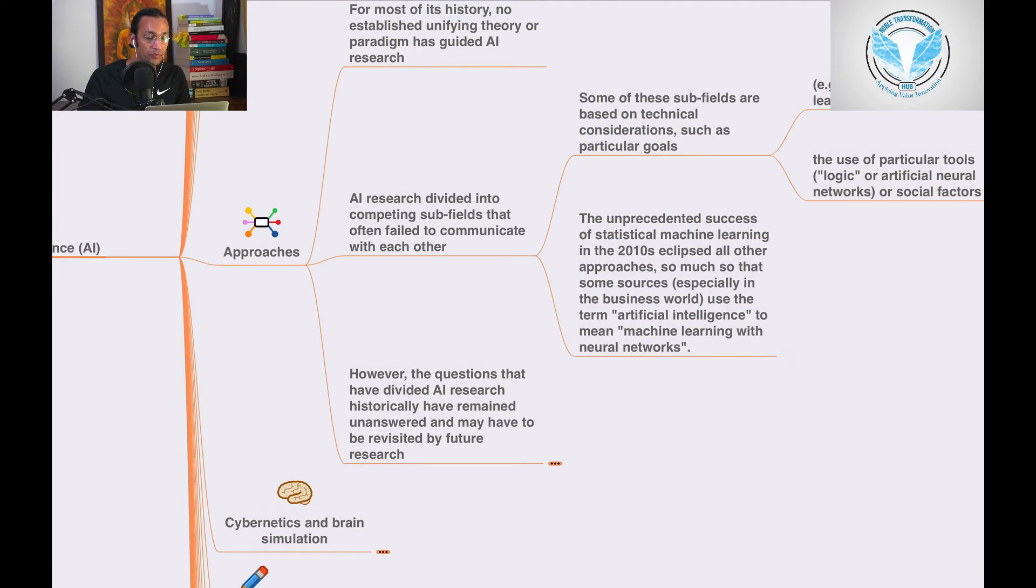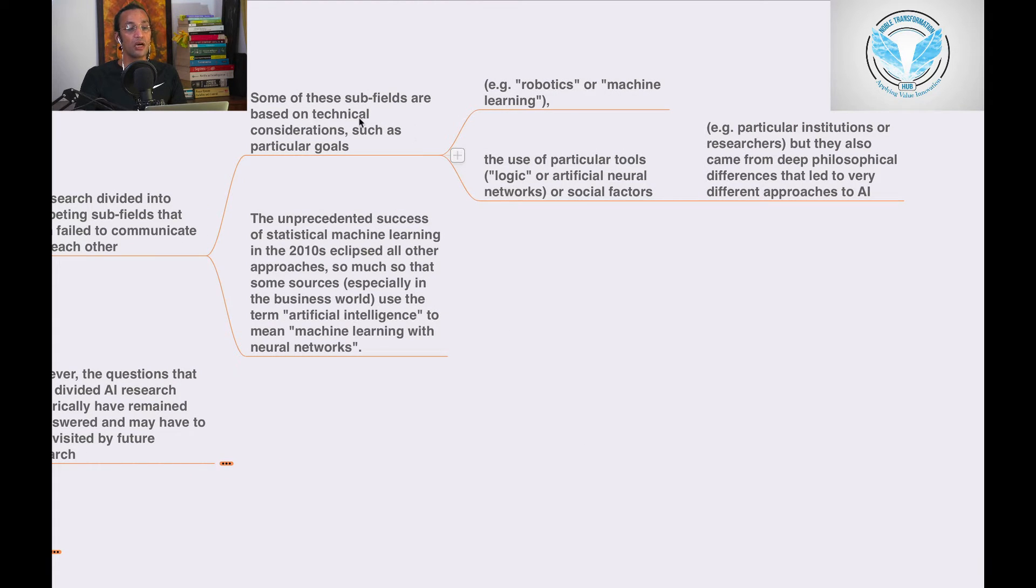Some of these sub-fields are based on technical considerations, such as particular goals like robotics and machine learning, the use of particular tools like logic or artificial neural networks, or social factors like particular institutions or researchers. But they also came from deep philosophical differences that led to very different approaches in AI.